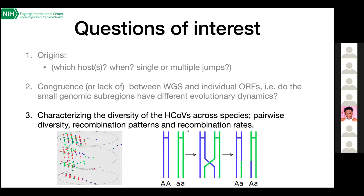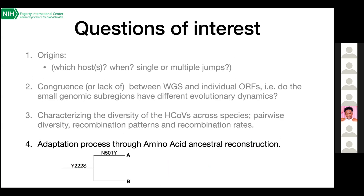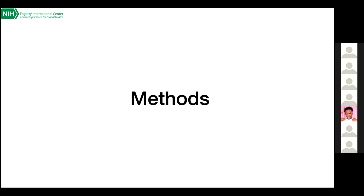We're also interested in looking at diversity in terms of pairwise nucleotide diversity, and understanding recombination patterns — whether recombination rates are similar across all seasonal coronaviruses or quite different, indicating diverse origins. The last question is looking at the adaptive process from an amino acid angle — what sorts of amino acid changes are associated with the host transmission process, and what changes we see once the virus has established itself in a given host.